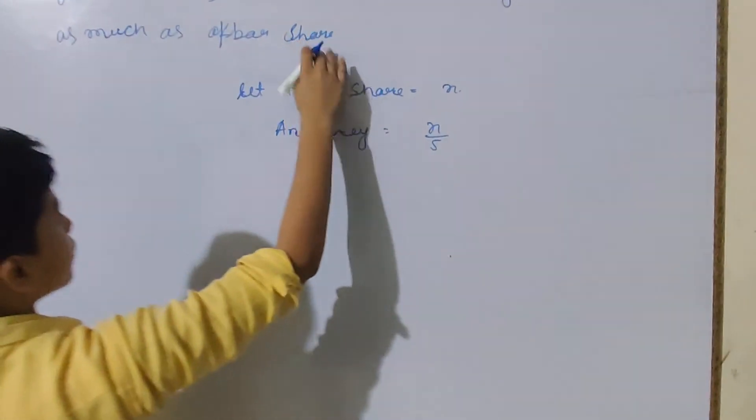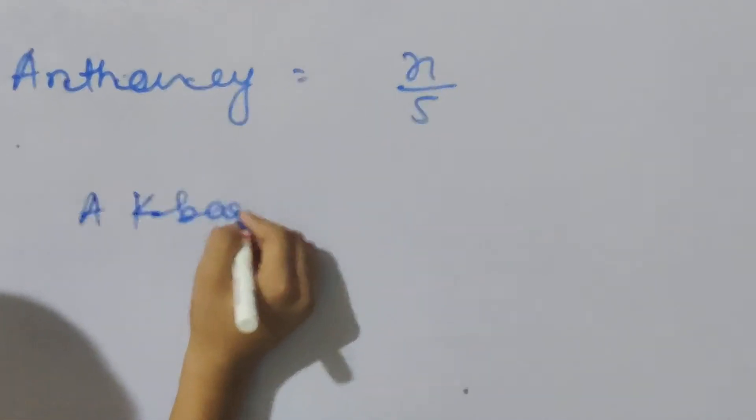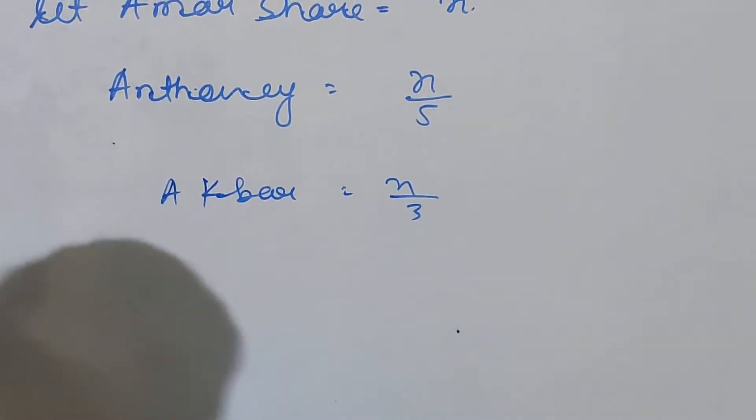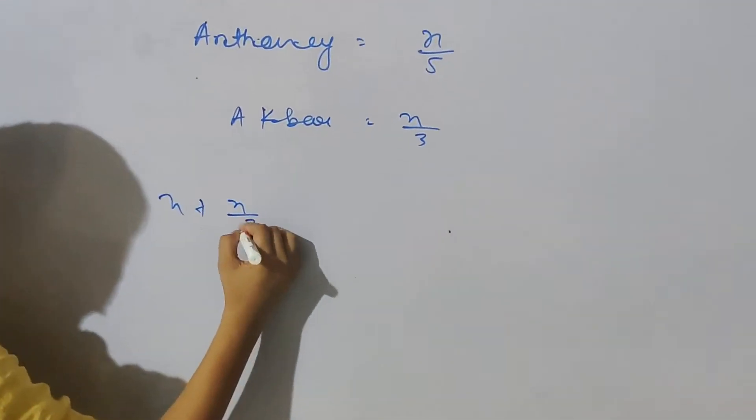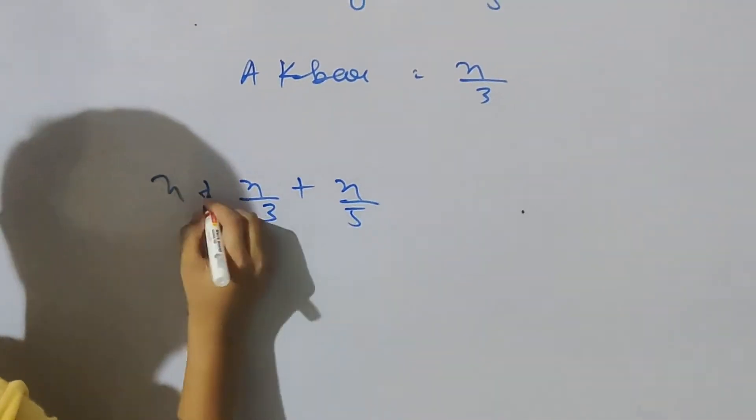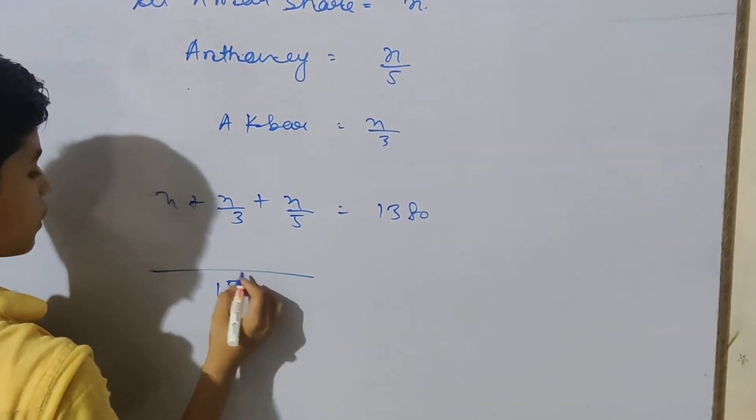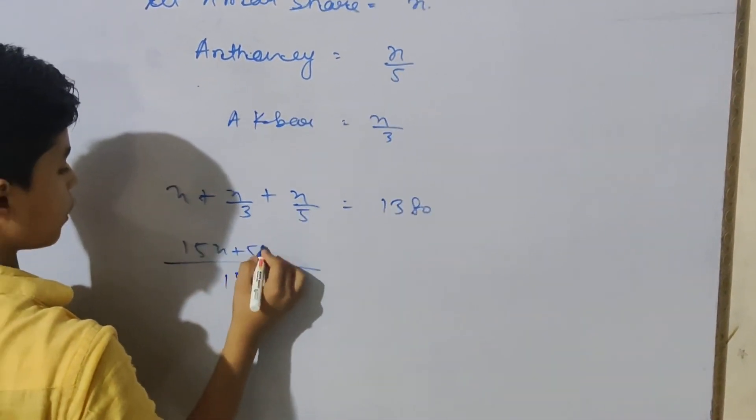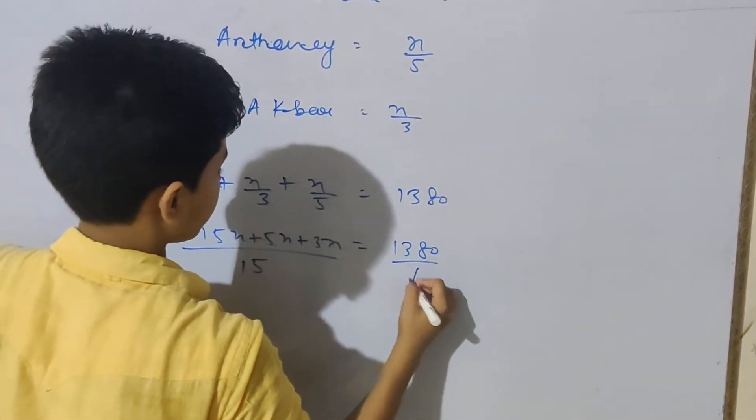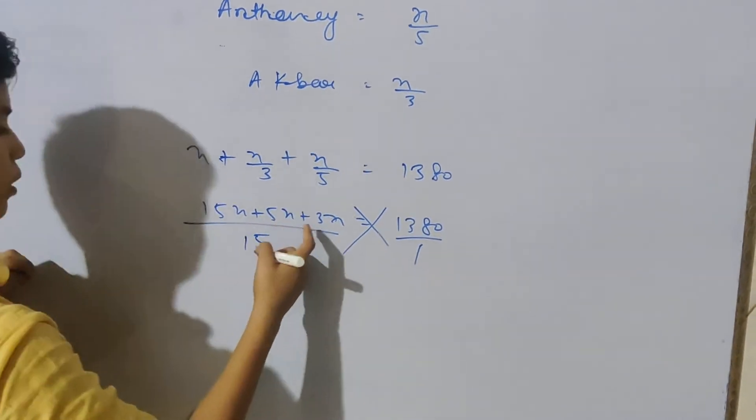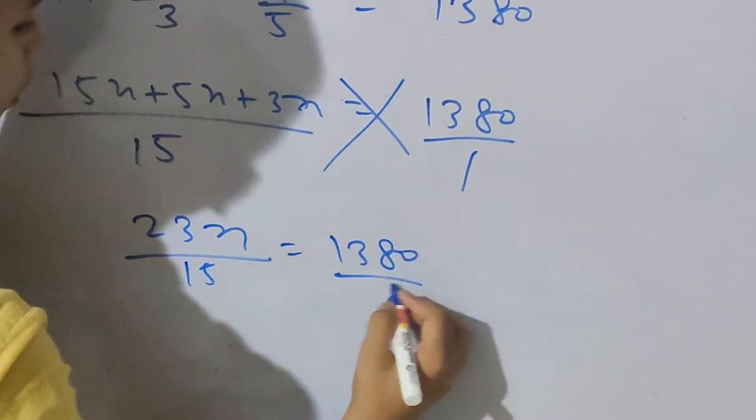And if Amar is 3 times Akbar, then Akbar has x/3. So x plus x/3 plus x/5 equals 1380. This gives us 15x plus 5x plus 3x over 15 equals 1380.